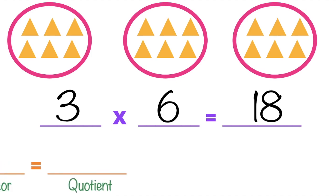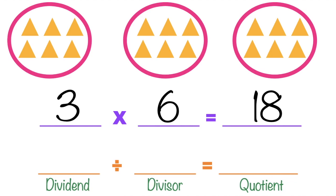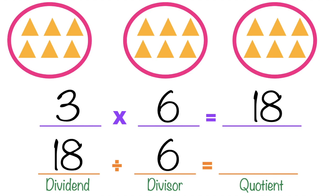Now for the division sentence: the dividend is the total number of objects — that's 18 triangles. The divisor is six, because you divide 18 by six triangles. The quotient is three, because we have three sets of six triangles. So, 18 divided by 6 equals 3.